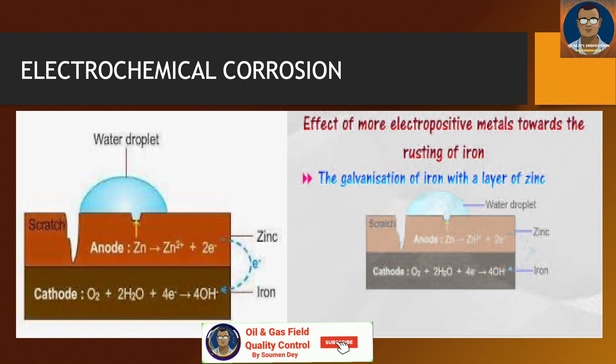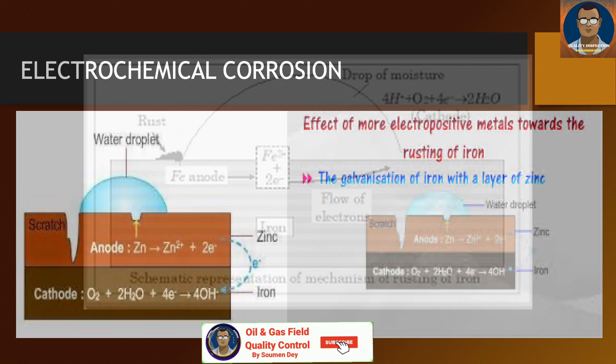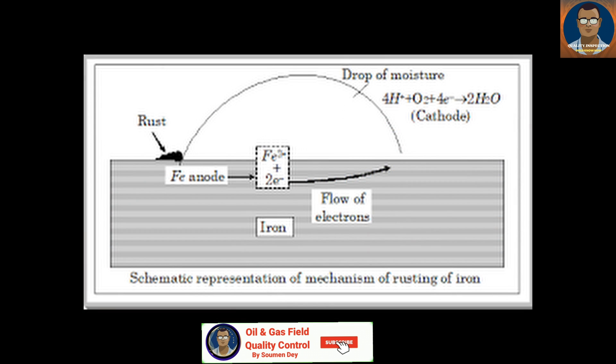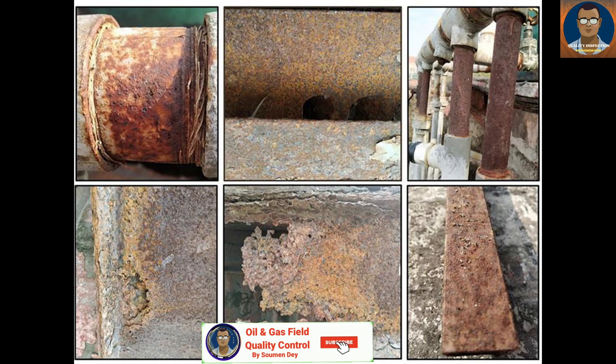Examples of electrolytes include salt water, soil, or pore water in concrete. One basic point: pure water without any contamination or chemicals is a very bad conductor of electricity. It must be salt water or mixed with some chemicals to make electrochemical corrosion happen.